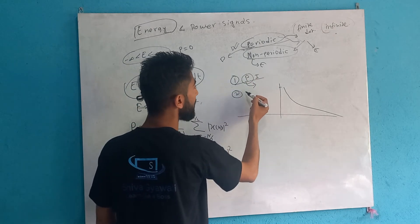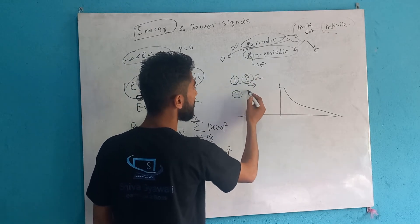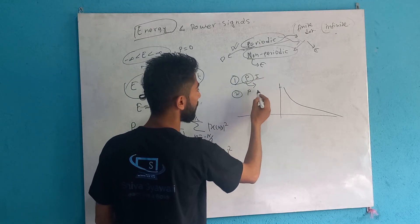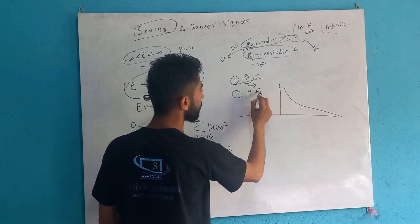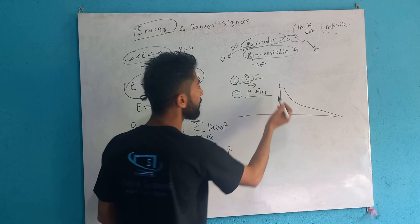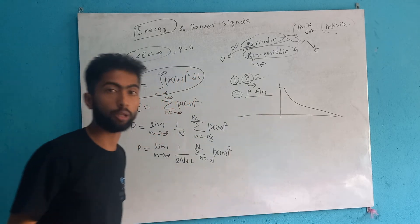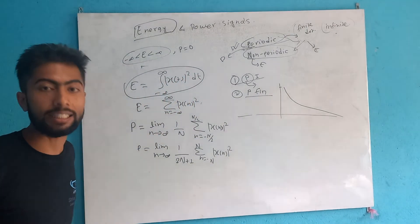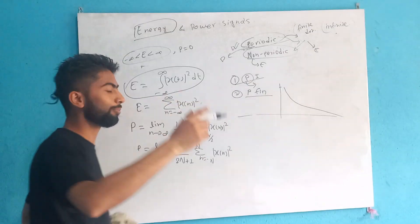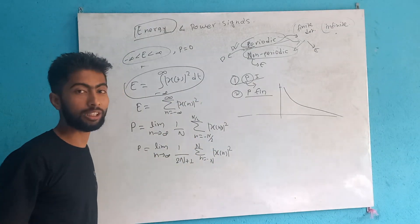If there is a periodic signal or finite duration, then the chance is 99% that a certain percentage will come out.